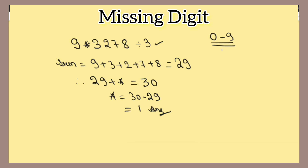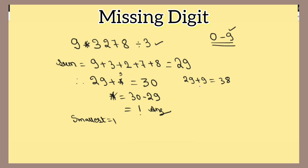One question can also come in the form of finding the smallest and largest possible digit for the star. For the smallest, 1 is okay. For the largest, you need to check from the back — starting from 9 and going backward. So check 29 plus 9, 29 plus 8, and so on backward.